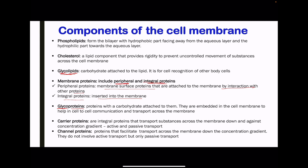Carrier proteins are integral proteins that transport substances across the membrane both down and against a concentration gradient, meaning they can use both active and passive transport. Channel proteins are proteins that facilitate transport across the membrane down a concentration gradient only, meaning they carry out only passive transport — no ATP is required for transport across channel proteins.